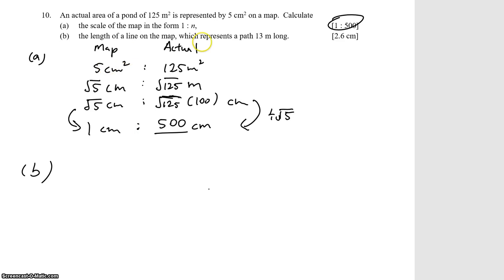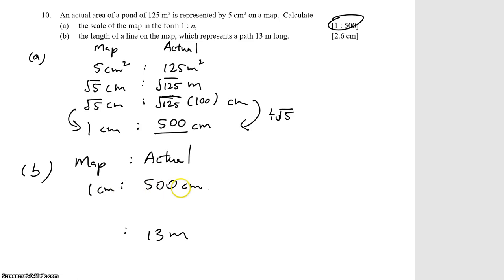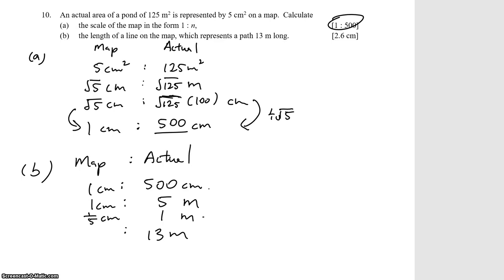With the scale 1 cm to 500 cm, part B asks for the map length of a path that is 13 meters long. First change units: 500 cm equals 5 m, so 1 cm represents 5 m. Divide both sides by 5 to get 1 m = 1/5 cm. Then multiply both sides by 13 to get 13/5 = 2.6 cm. That's the answer.